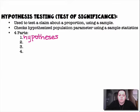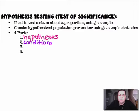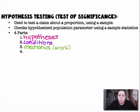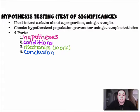First, we're going to come up with our hypotheses. Then we're going to state the conditions. Then we're going to do the mechanics, which is the work. And then we're going to have our conclusion, which is made up of two sentences.